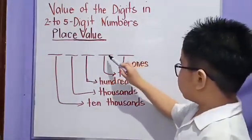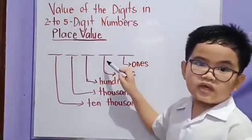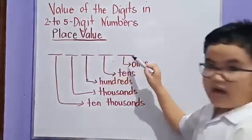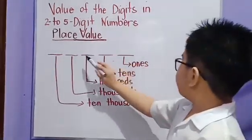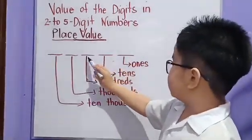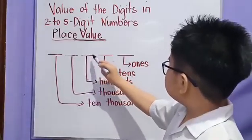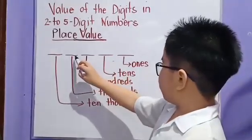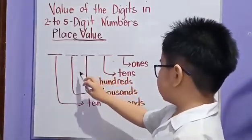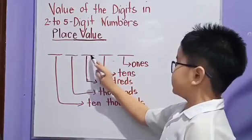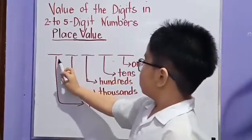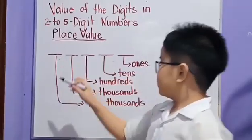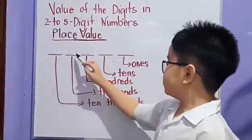The place value of each digit is ten times the place value of the digit to its right.